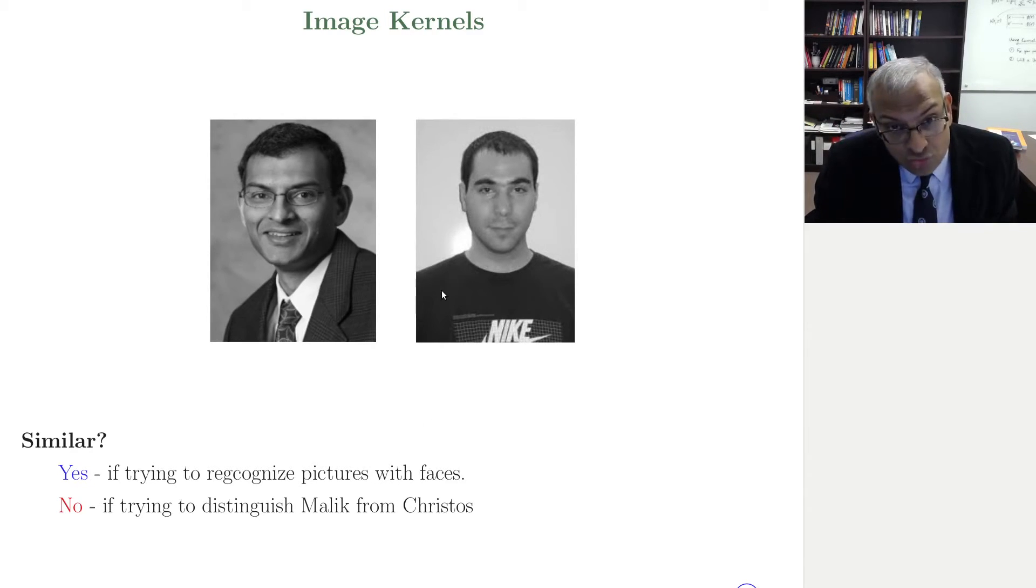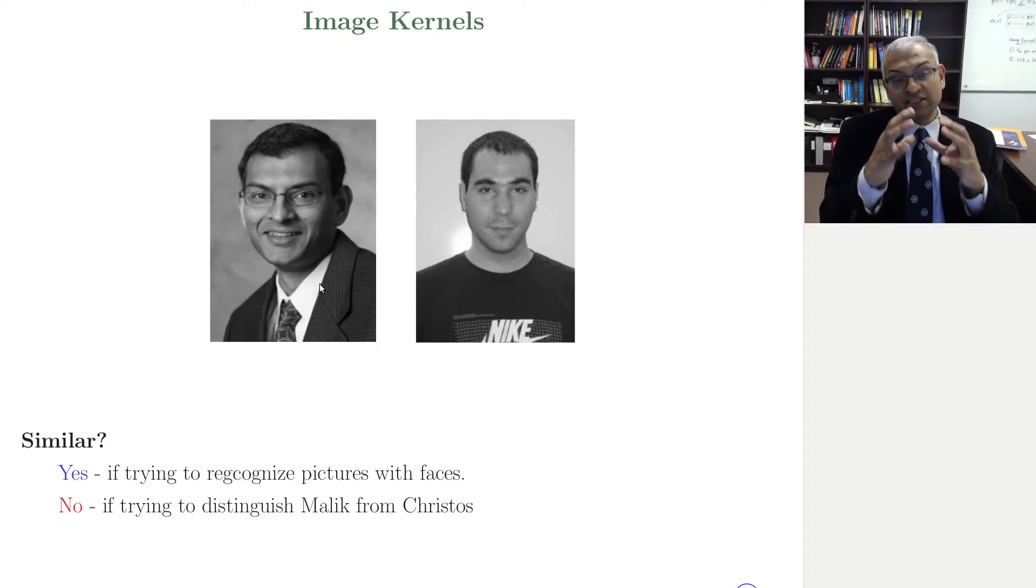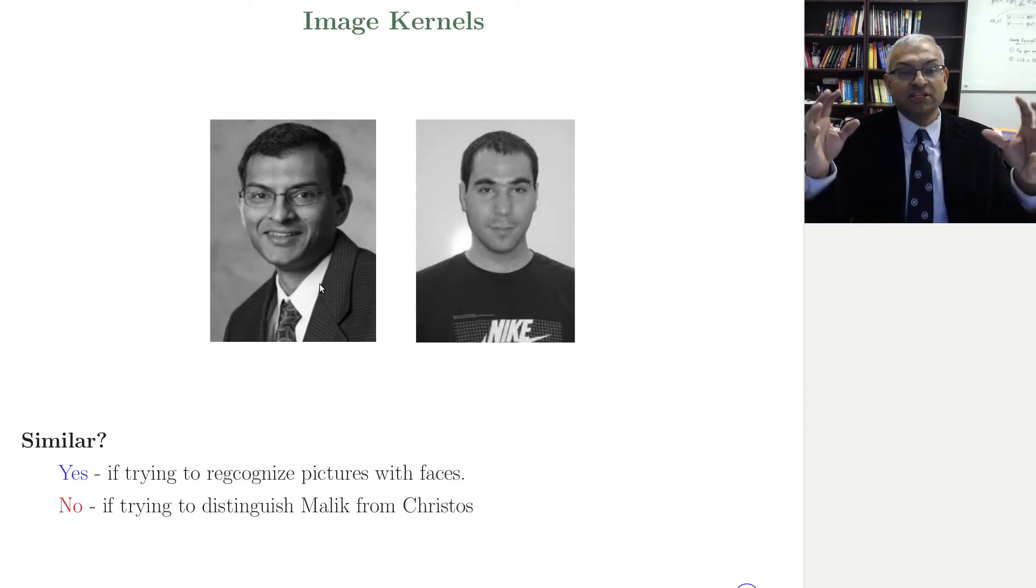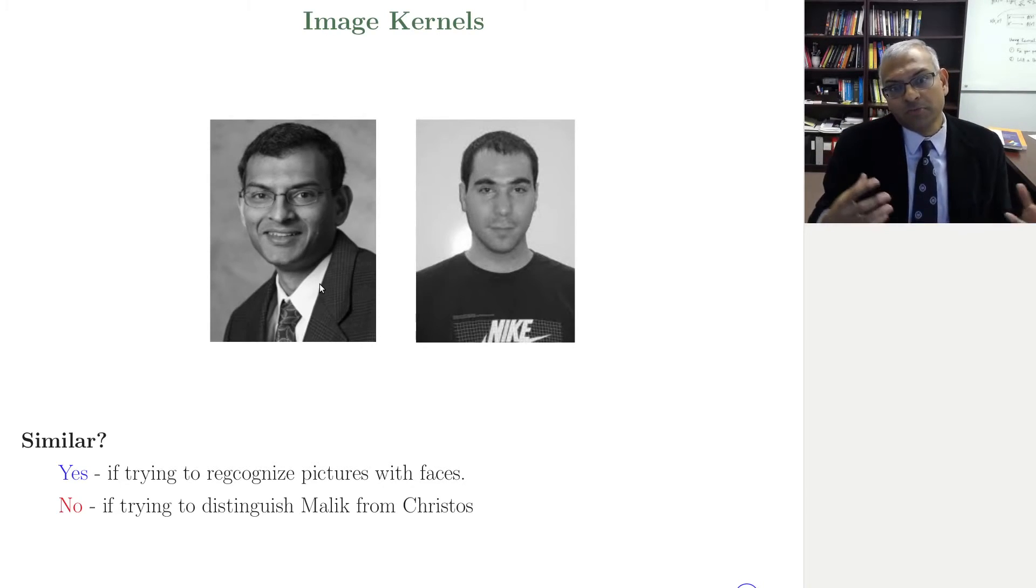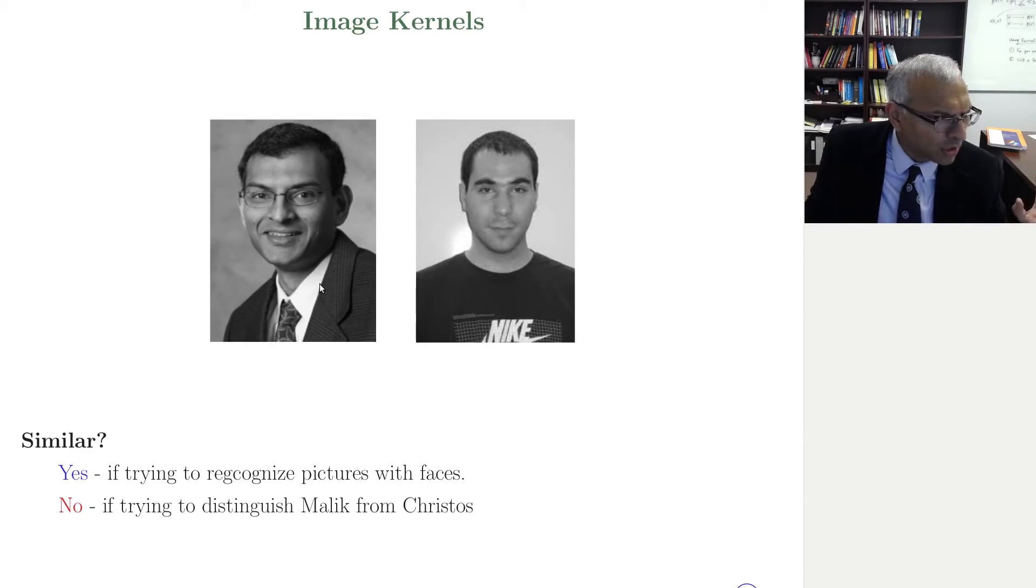On the other hand, these two images are not similar if the task is, let's say, access control, and you are trying to distinguish Malik from Christos, then these two are not similar. So you need much more detailed measure of similarity. The kernel would have to get more intricate. And you could imagine even using a deep network to build image features. And then Euclidean similarity between image features built from some, let's say, ImageNet pre-trained deep network would be the measure of similarity. And now you can, on top of that, run the kernel machinery. Bam! So many things you can do with the power of the kernel machinery.